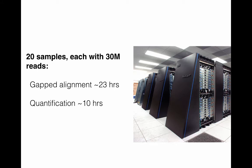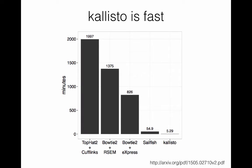With current state-of-the-art methods, if you want to align 20 samples, each with 30 million reads, you're looking at a gapped alignment time of about 23 CPU hours. Additionally, quantification of expression levels takes an additional 10 hours. Kallisto aims to improve on this by being much, much faster. In fact, they claim that you can process up to 10 million reads per minute on a standard laptop computer. As you can see from the figure, it is orders of magnitude faster than Bowtie 2 or TopHat 2.